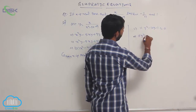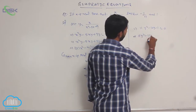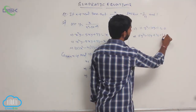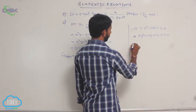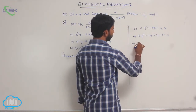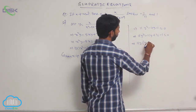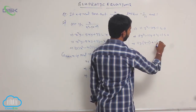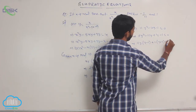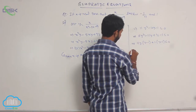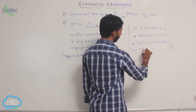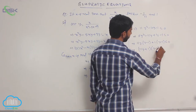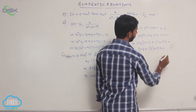In the first two terms 11y is common: 11y(y - 1) + 1(y - 1) ≤ 0. The factors are (11y + 1)(y - 1) ≤ 0.